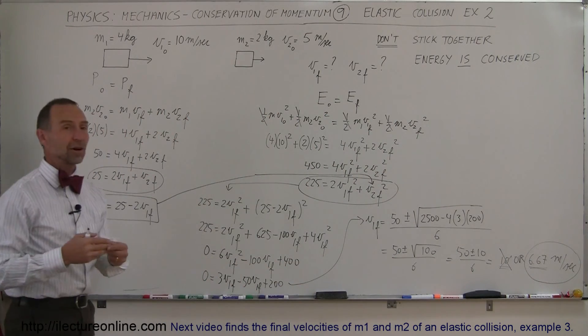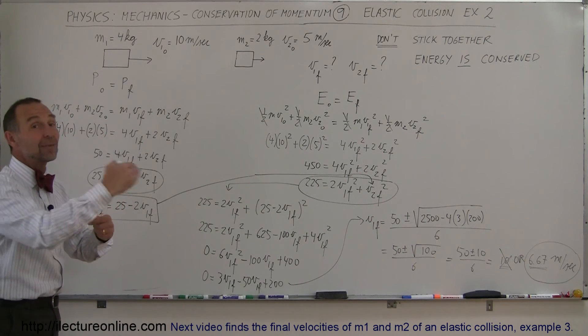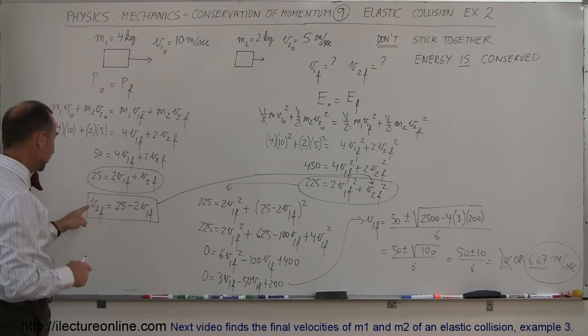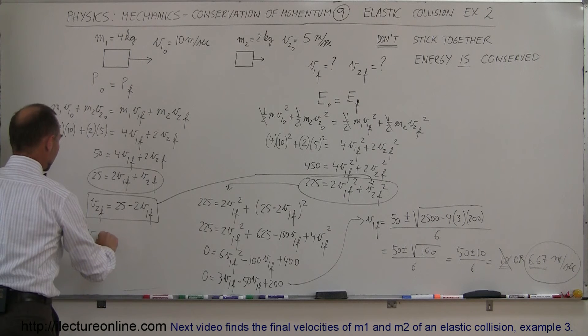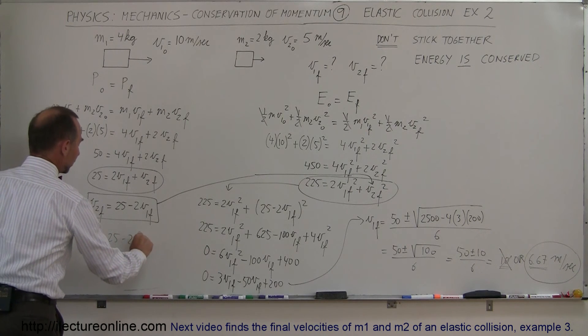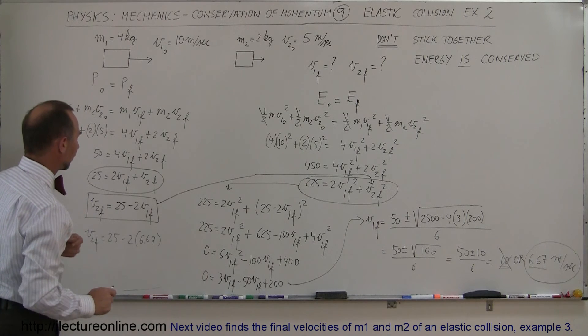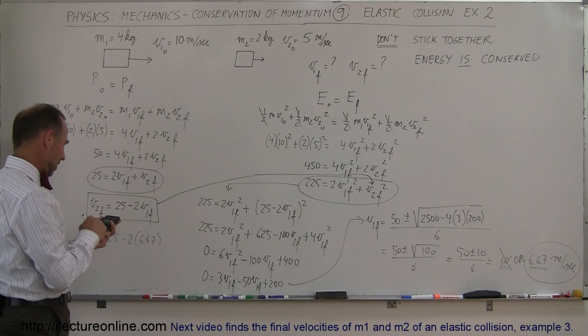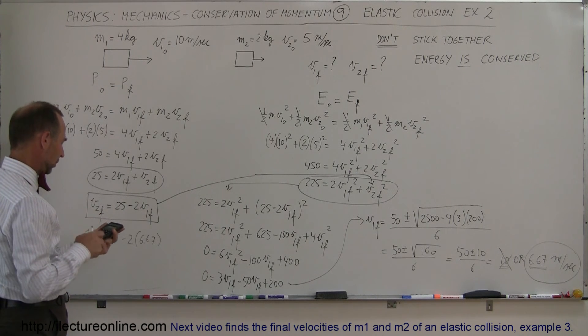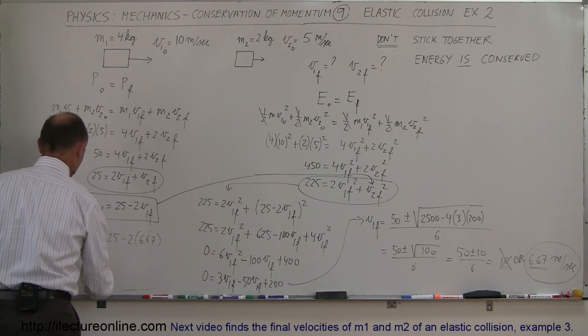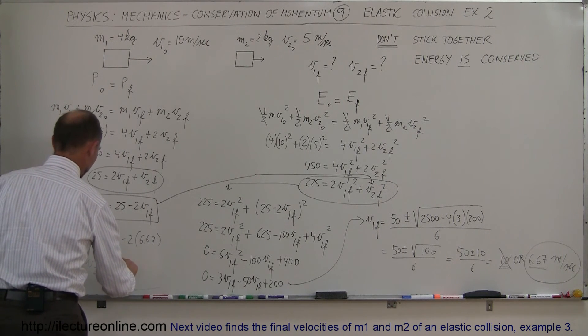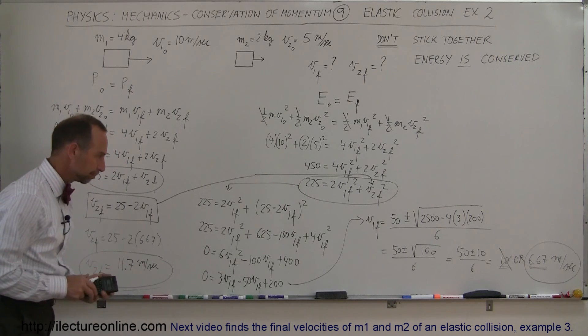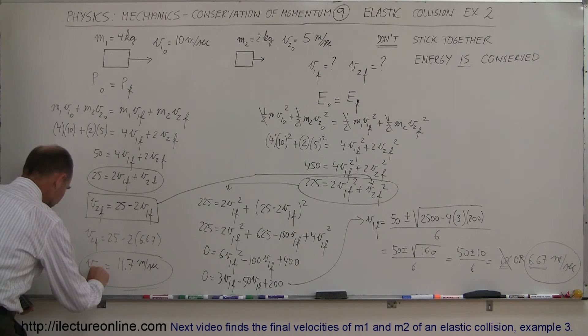So now that we know what V1 final is, we can then use this equation to find V2 final. So V2 final will be equal to 25 minus 2 times V1, which is 6.67. And of course, that's 13 and a third minus 25. So 25 minus 13.3333 equals. And so V2 final is going to be equal to 11.7 meters per second rounded off. And there's our second answer. That didn't come out quite right. There we go. V2 final. So those are the two answers then.